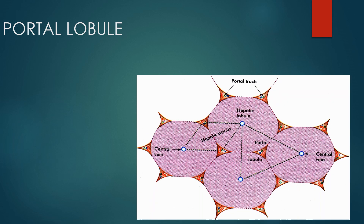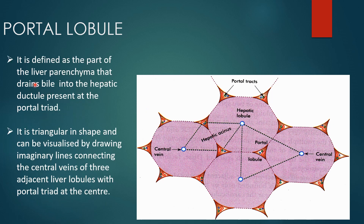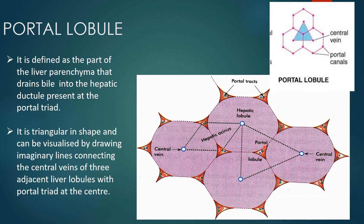The portal lobule emphasizes the exocrine function of the liver. It is a triangular block of tissue with the portal area at the center and three central veins of three adjacent hepatic lobules at each corner. This organization shows those areas of three adjacent hepatic lobules that drain into this bile duct. It is defined as the part of liver parenchyma that drains bile into the hepatic ductule present at the portal triad — triangular in shape, visualized by drawing imaginary lines connecting central veins of three adjacent liver lobules with the portal area at the center.